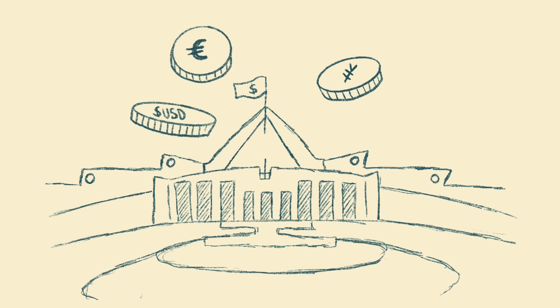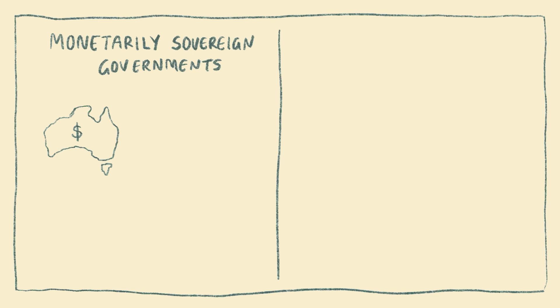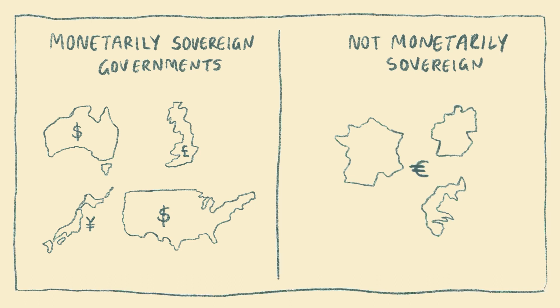Australia has a monetarily sovereign government, as do the UK, the US, and Japan. However, the eurozone countries are not monetarily sovereign, as they do not have their own currencies.